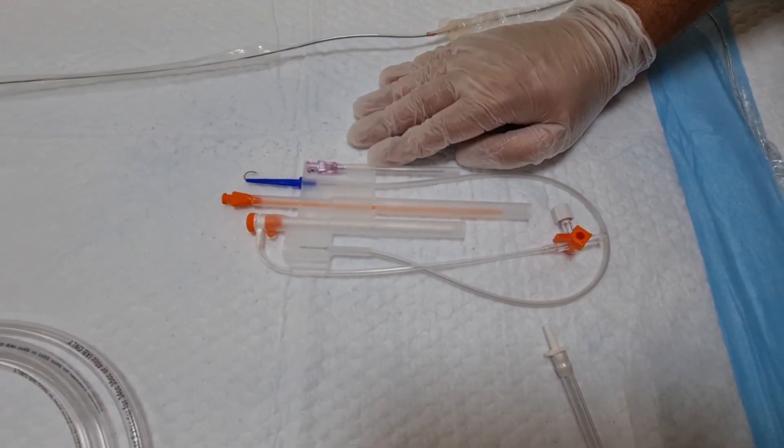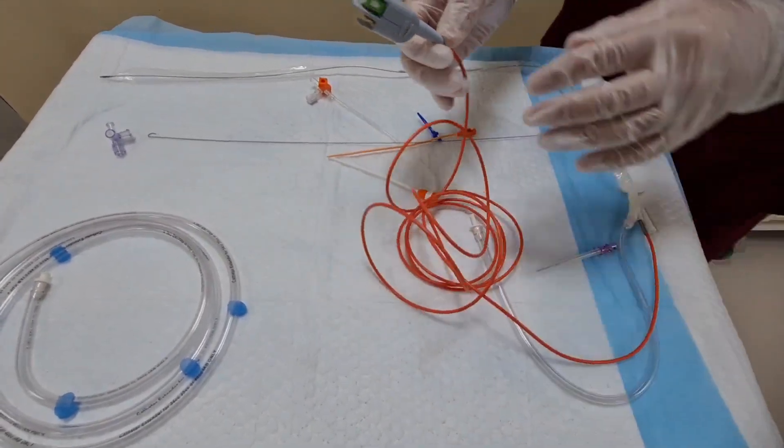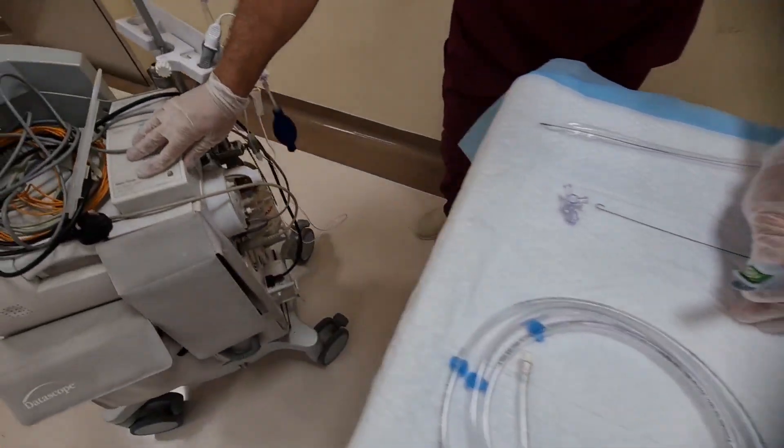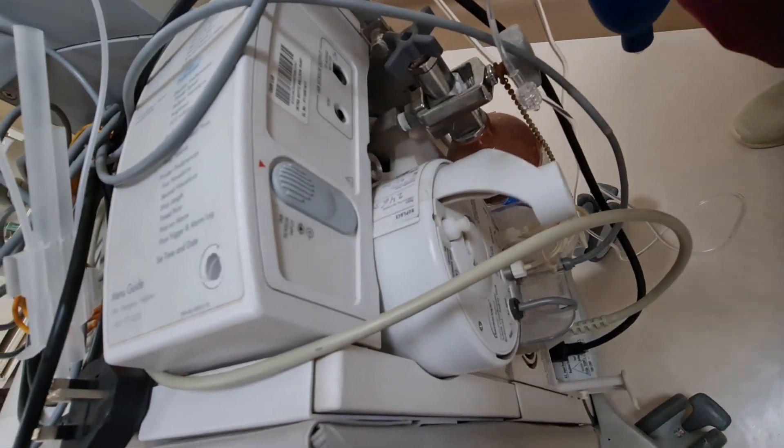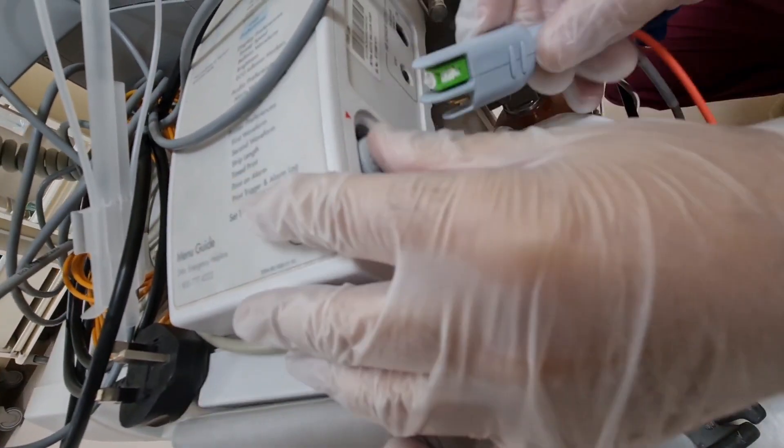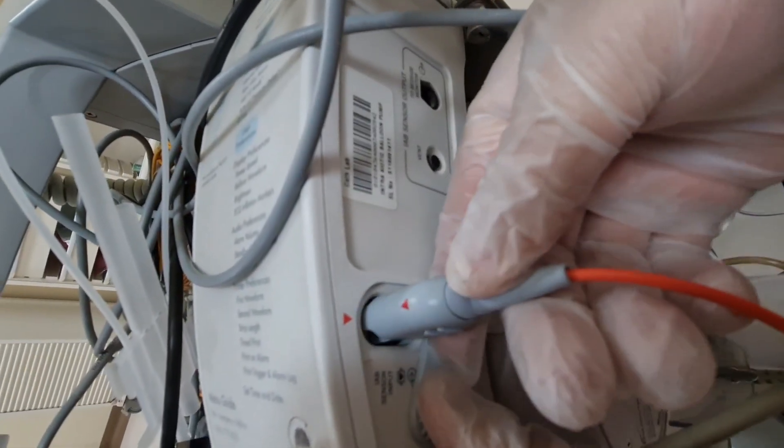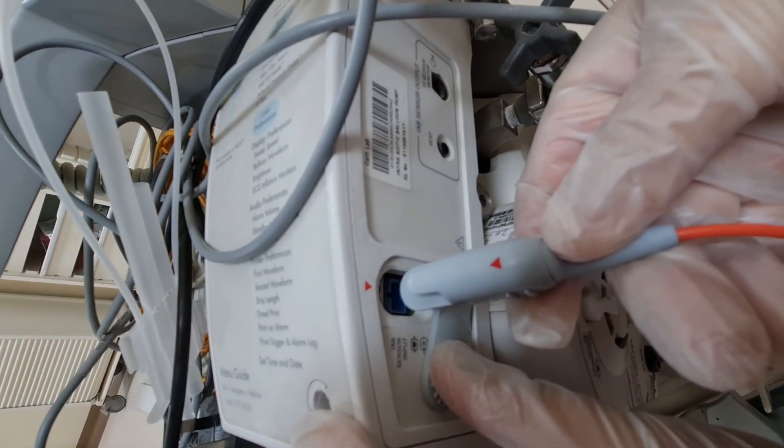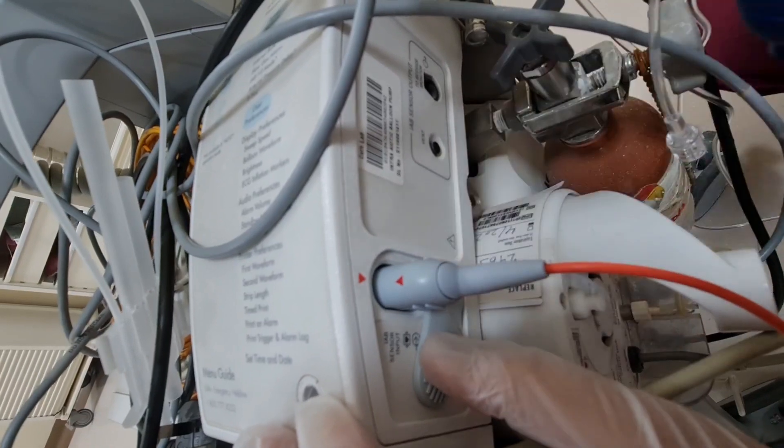This procedure is performed with Seldinger technique. First we prep the sensor input cable. We need to connect it to the machine on the back side. Here's a port for the sensor input. Make sure there's an arrow, so arrow goes to the arrow. If we insert it this way it will not be inserted, it's wrong. Make sure this arrow is inserted into the arrow position like this.